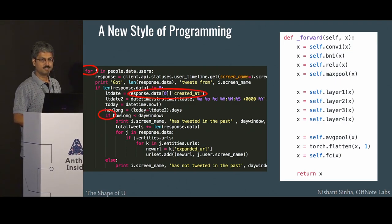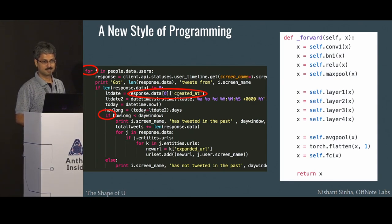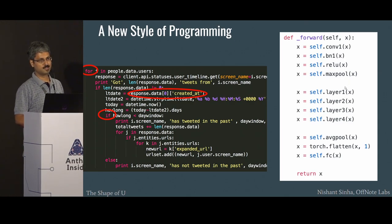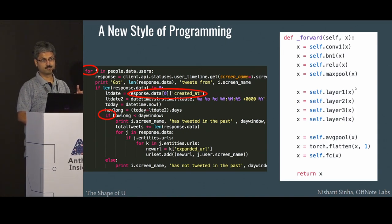The stuff you're used to — for loops, if-then-else — you can't find them in 2.0 style. Used to lists and dictionaries? You don't find those there either. More and more systems are written in 2.0 style; they form the core algorithm part of it.